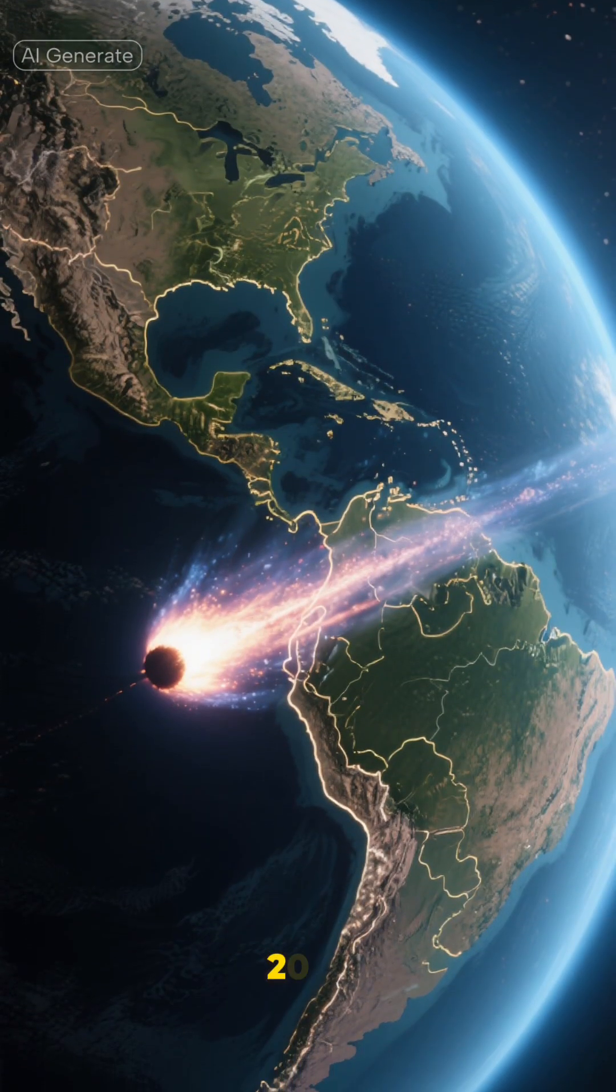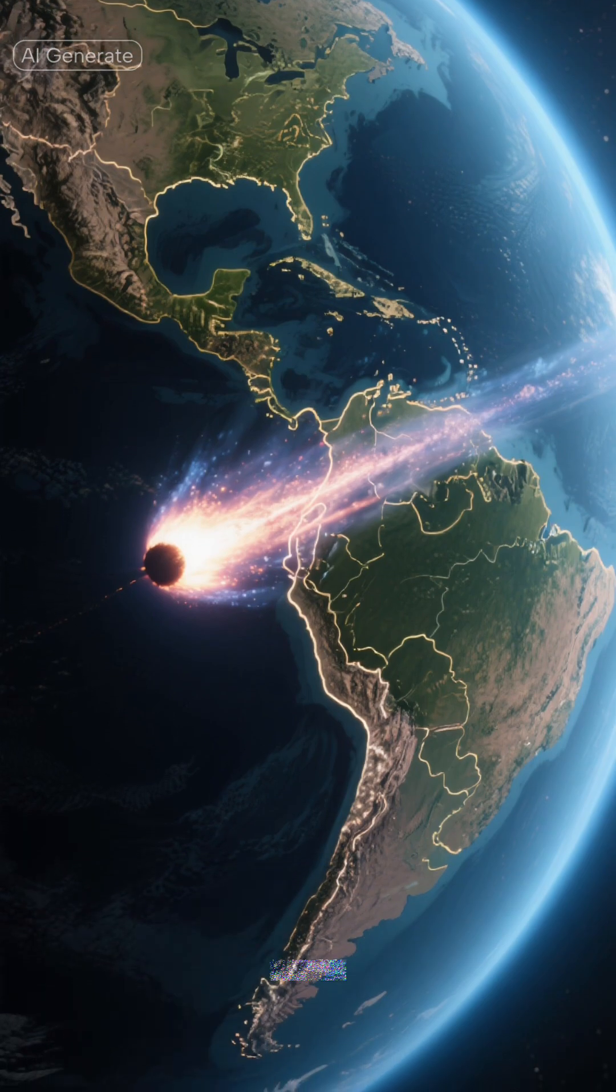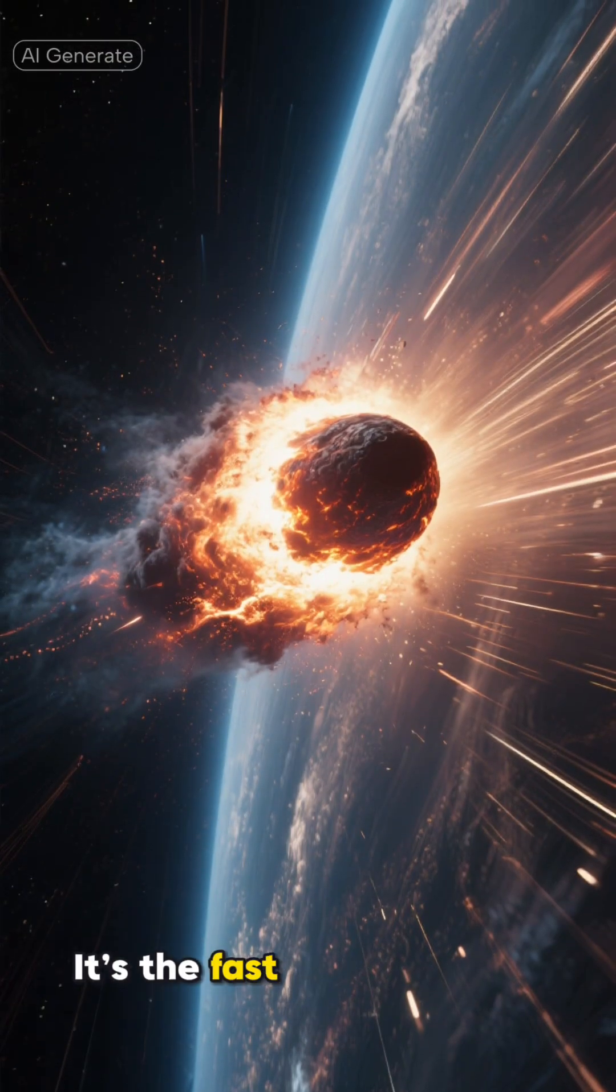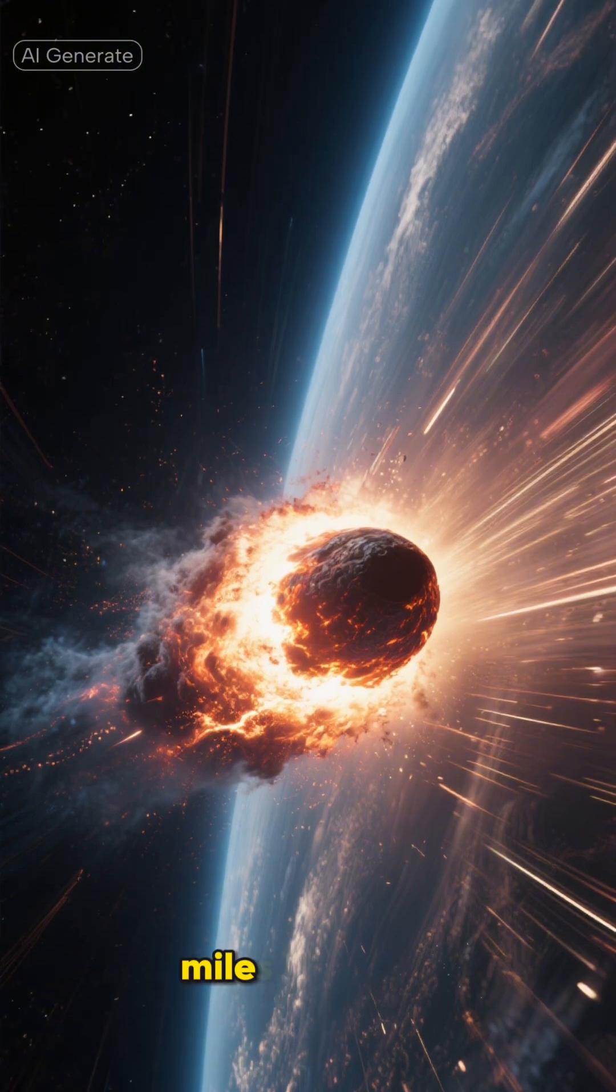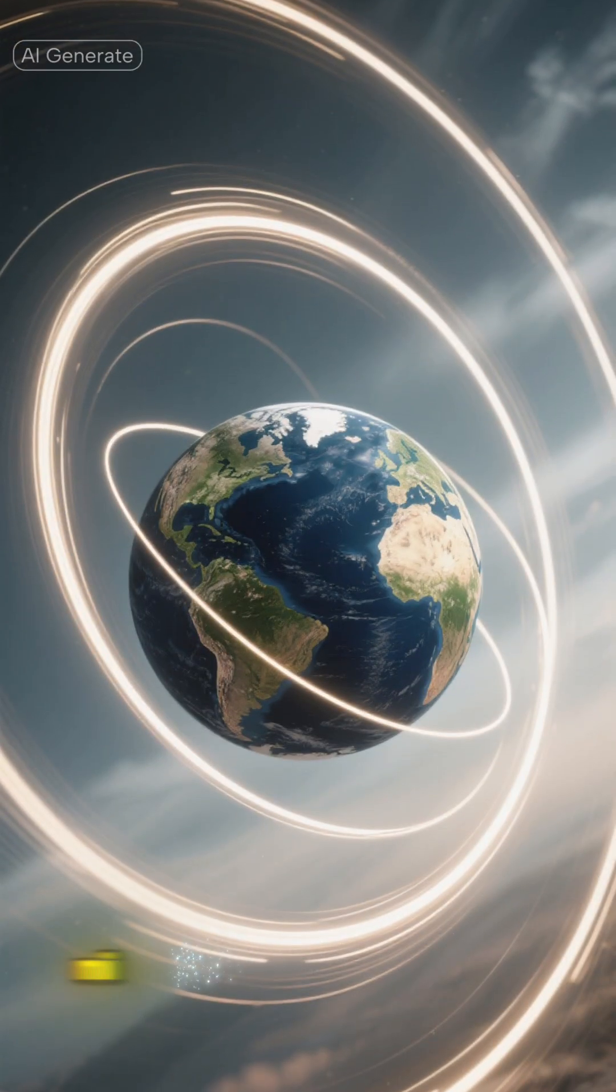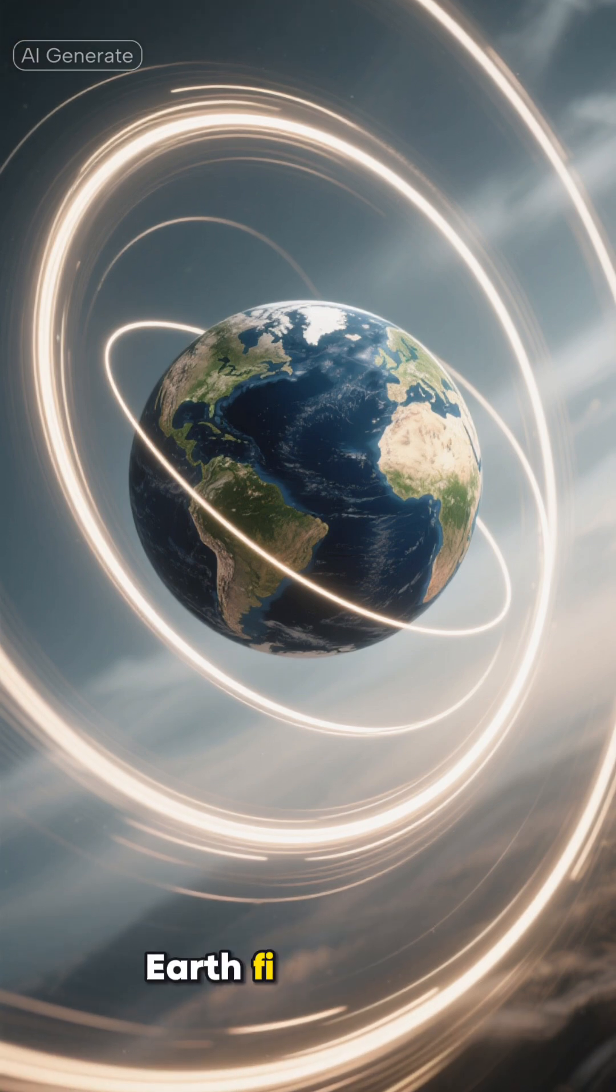Discovered on July 1st, 2025 by the Atlas Survey in Chile, this comet is something truly special. It's the fastest interstellar object ever recorded, blasting through space at about 130,000 miles per hour. That's 209,000 kilometers per hour, fast enough to circle Earth five times in just one minute.